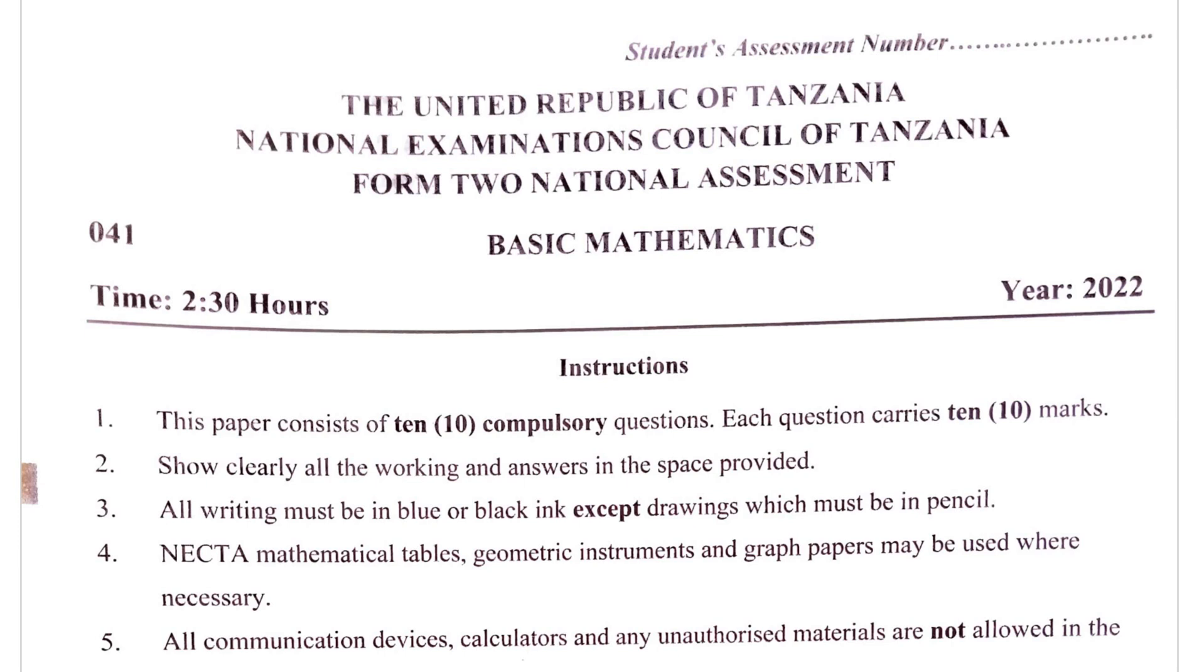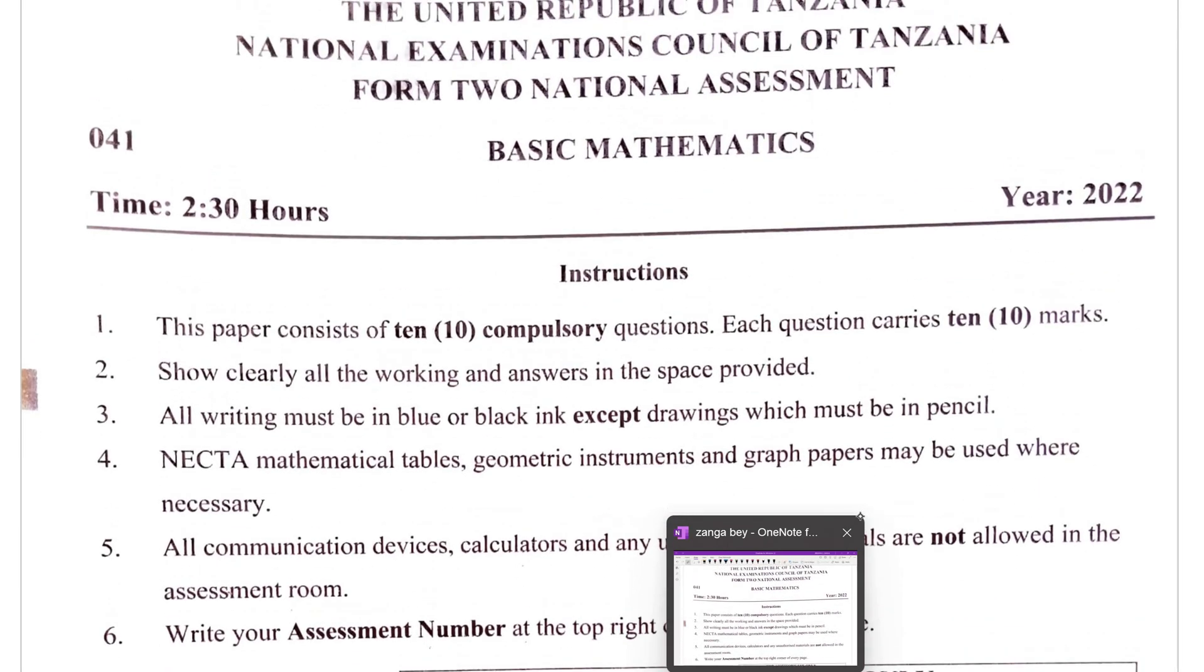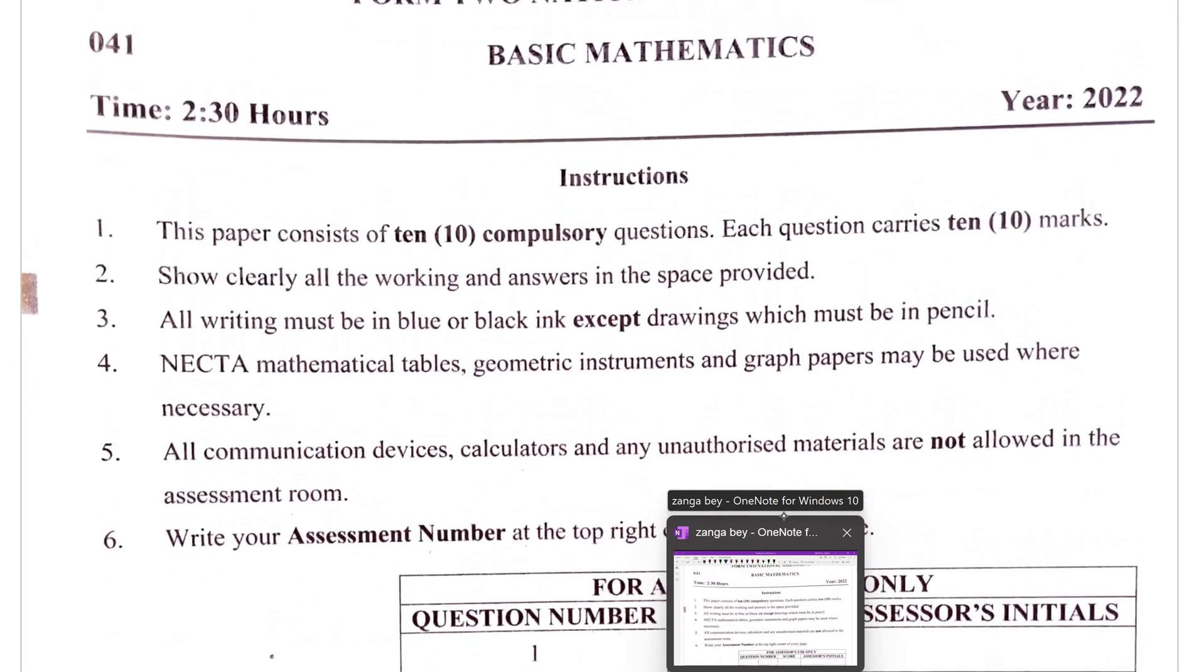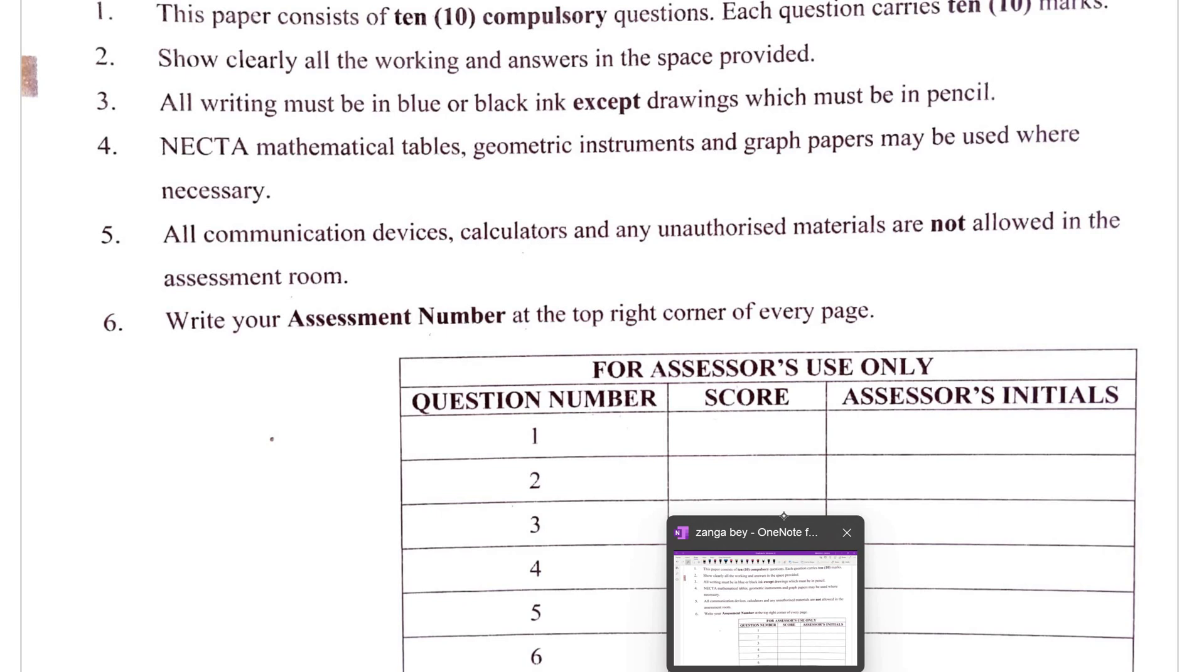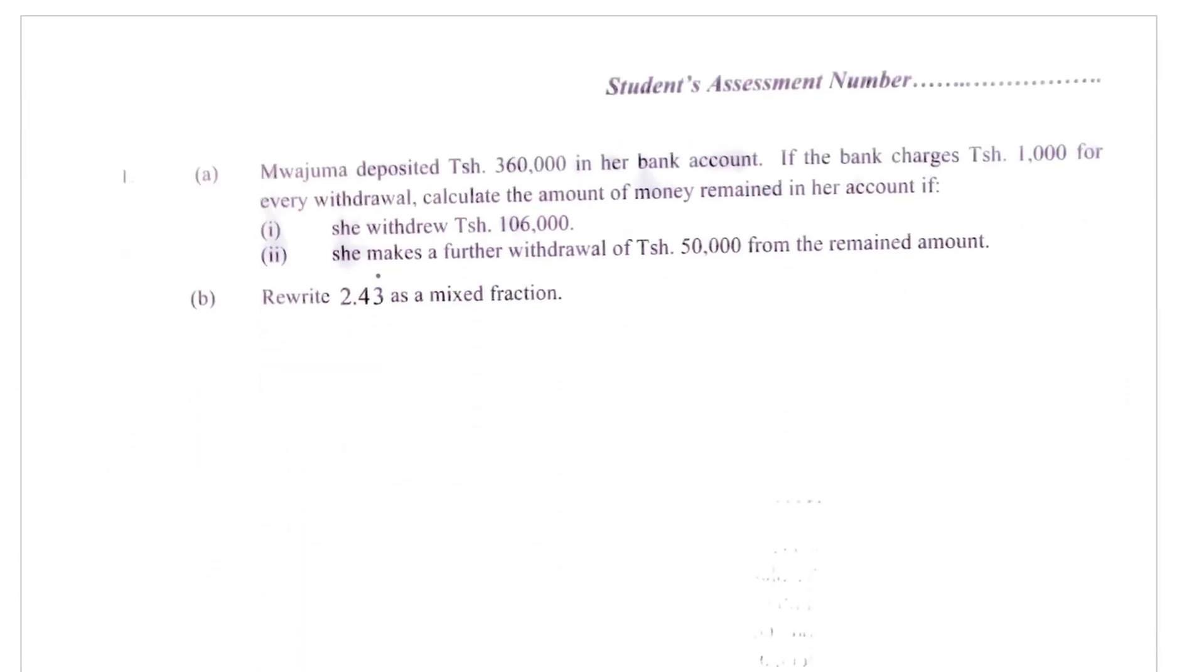NECTA mathematical tables, geometric instruments and graph papers may be used where necessary. All communication devices, calculators and any unauthorized materials are not allowed in the examination. Write your assessment number at the top right corner of every page. All students were supposed to obey the instructions, otherwise they will suffer the consequences. So we go directly to questions.